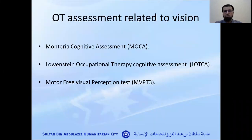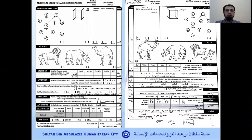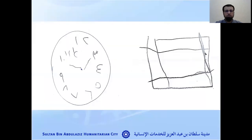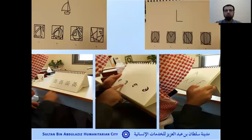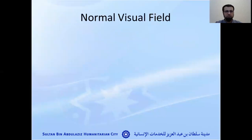We do some assessment related to visual rehabilitation. Some of these assessments include visual analytical skills and visual perception skills, as you can see in this picture. We also set a plan to work with those patients to improve their visual abilities.